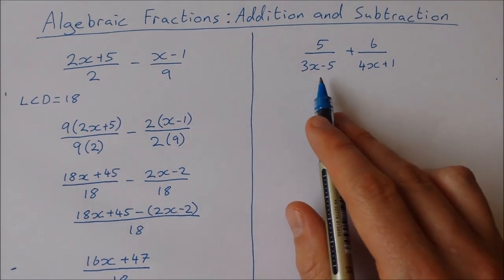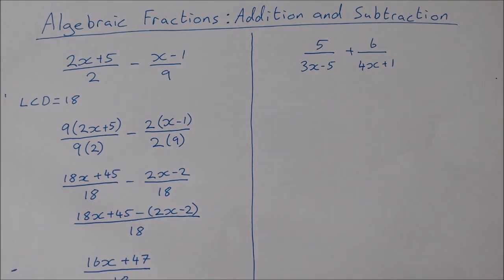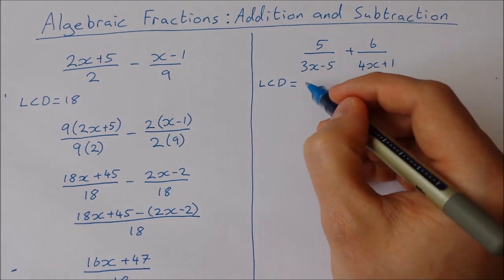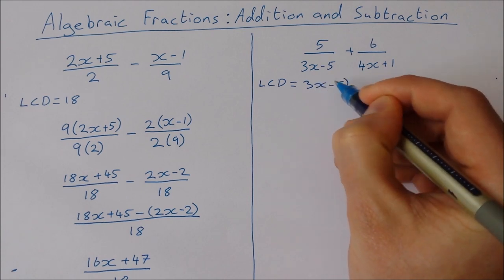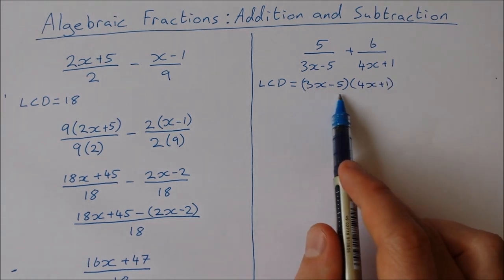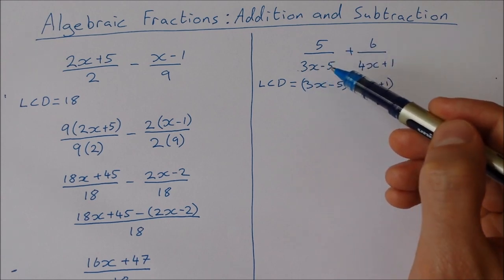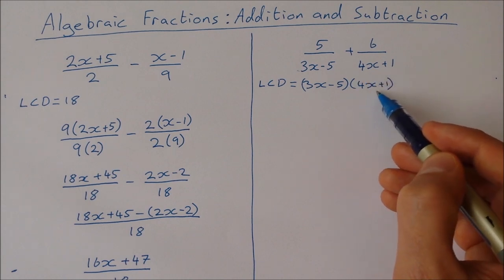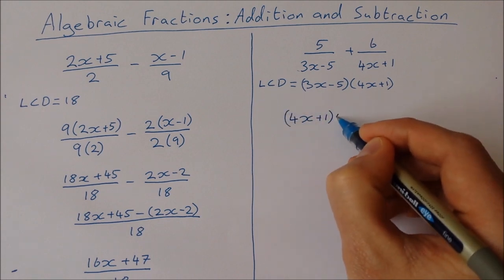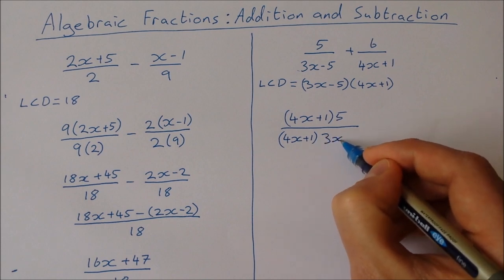Now we'll look at the second example. This one is a little different because we have algebraic expressions in the denominator, but we treat it the same way — we still find the lowest common denominator. In this case that's going to be (3x minus 5) times (4x plus 1). So I'm going to rewrite both fractions with this denominator. For the first fraction I already have (3x minus 5), so I need to multiply by (4x plus 1): that gives (4x plus 1) times 5 over (4x plus 1) times (3x minus 5).